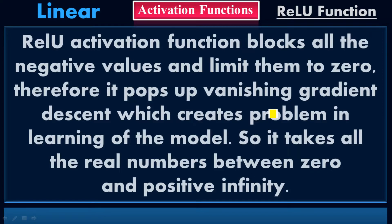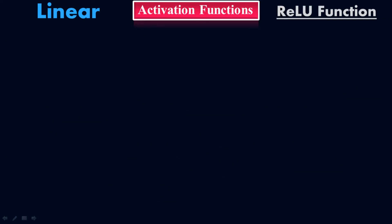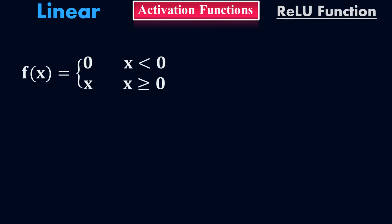That is the reason it creates a vanishing gradient descent problem. Vanishing gradient descent problem is a problem where it creates issues in learning of the model. The model cannot learn properly when the vanishing gradient descent problem exists, so you have to avoid the vanishing gradient descent problem. During learning of the model, it takes all the real numbers between 0 and positive infinity — from 0 up to positive infinity.